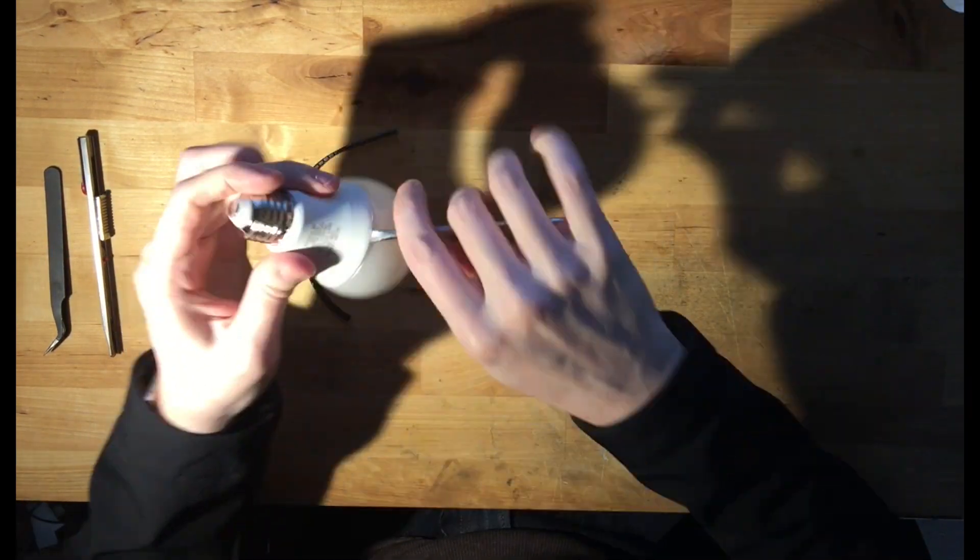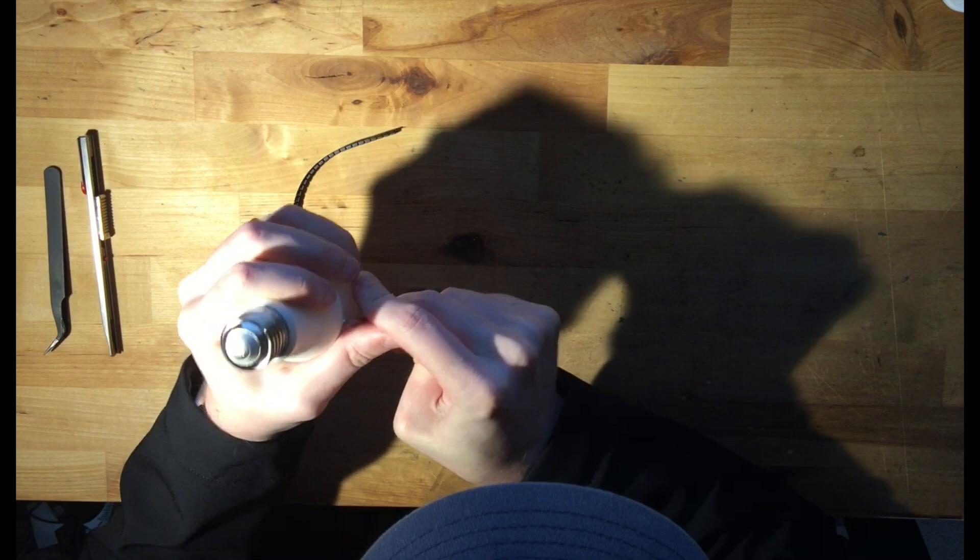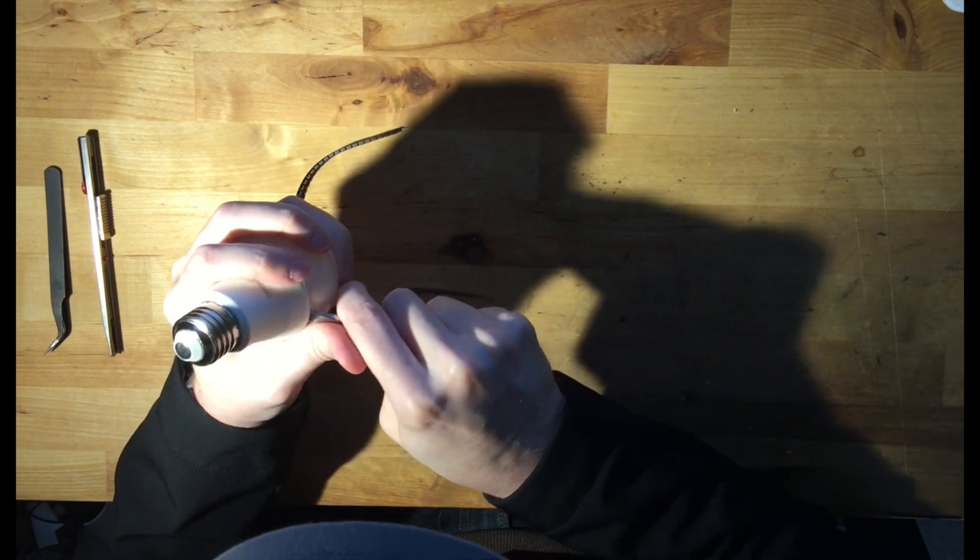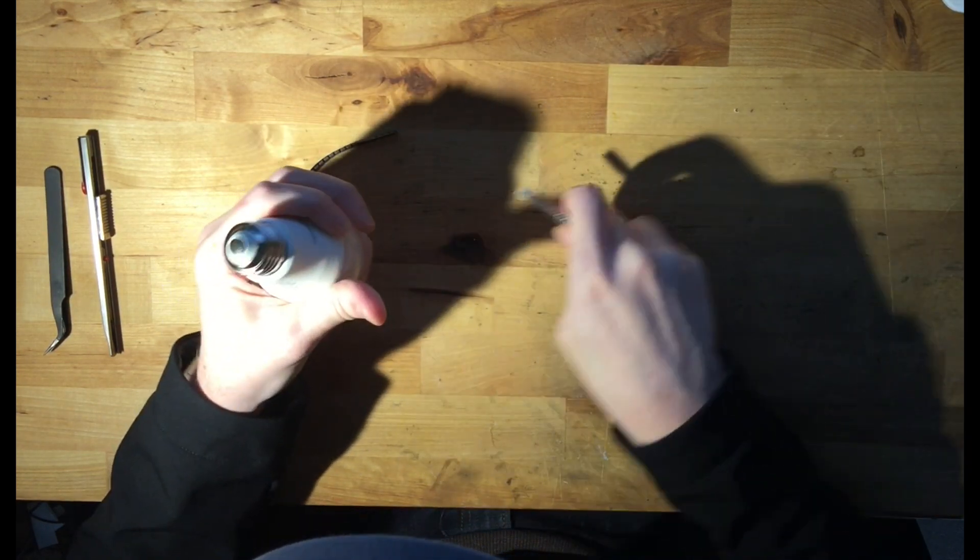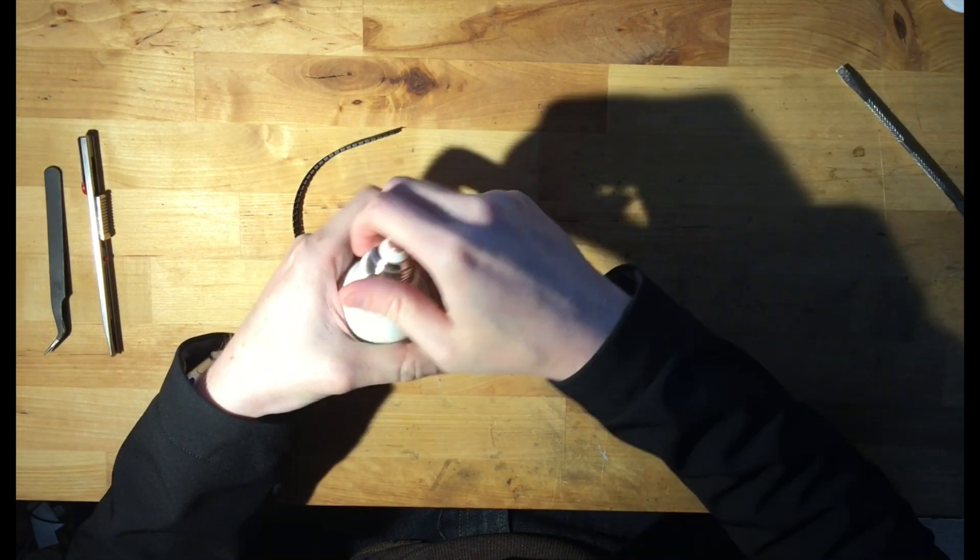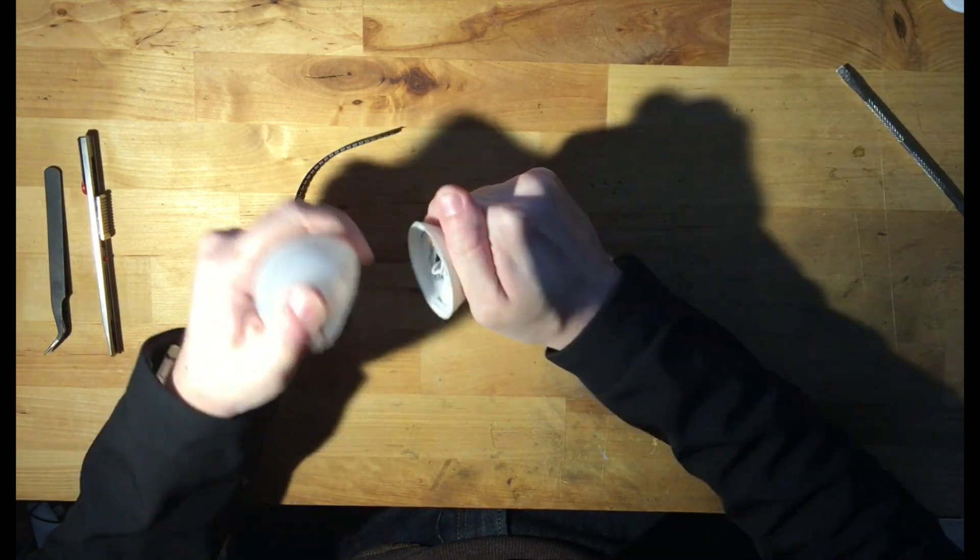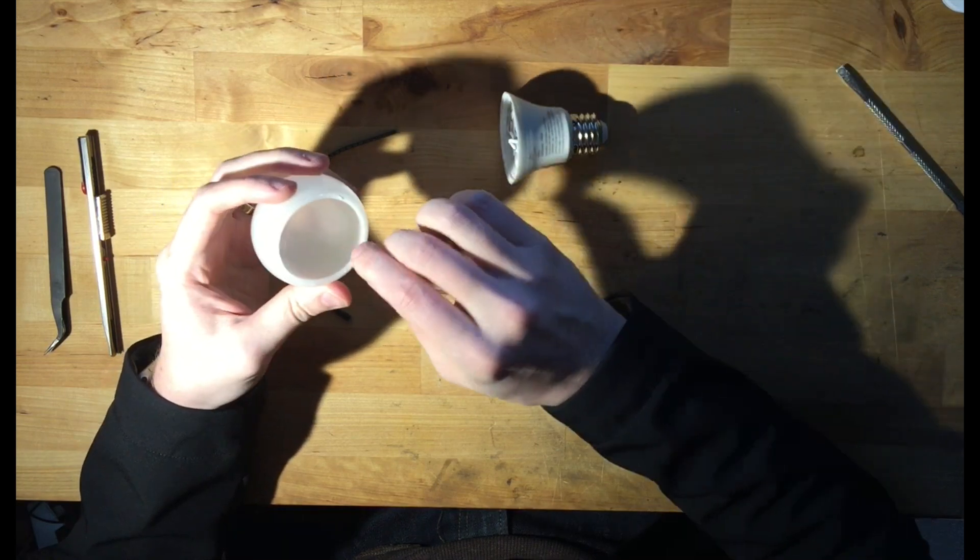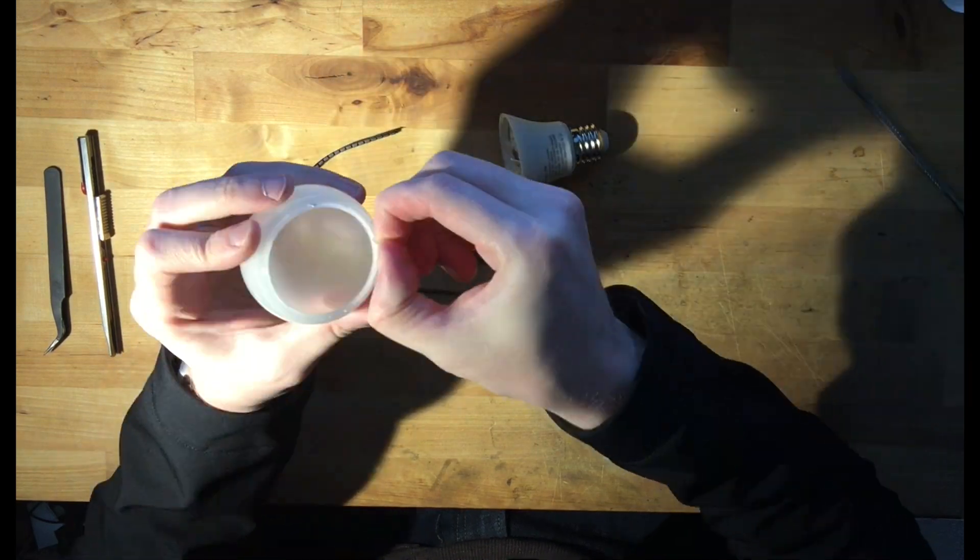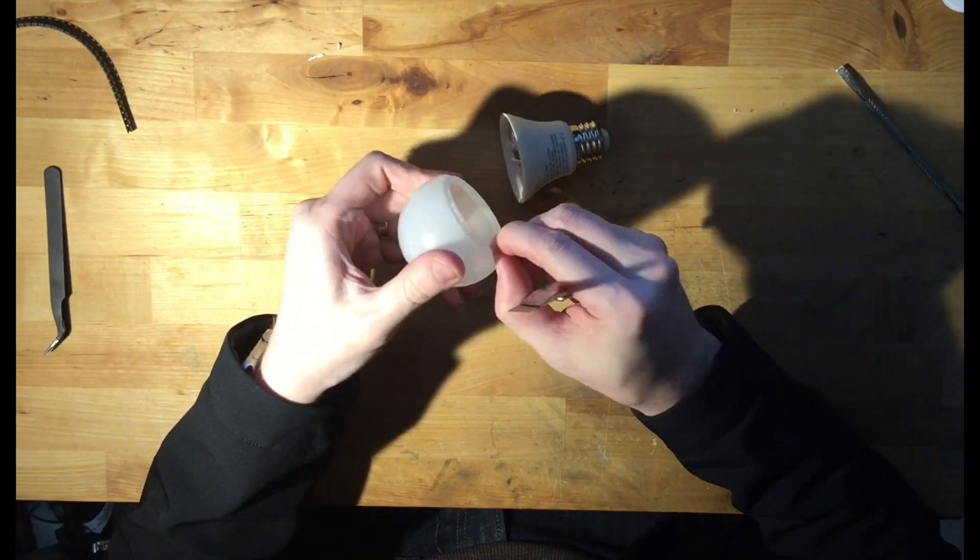Take your flat tip screwdriver and stick it into the side. Now the goal here is to do it at an angle that you're not going to leave a dent in the plastic body of the bulb. You can go around enough, probably two or three times, you're going to get a clean cut. You'll be able to pop it off just like I did here.